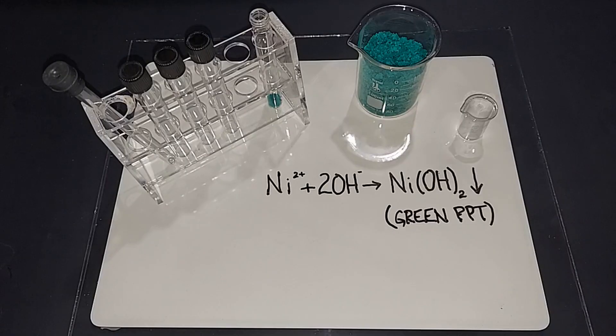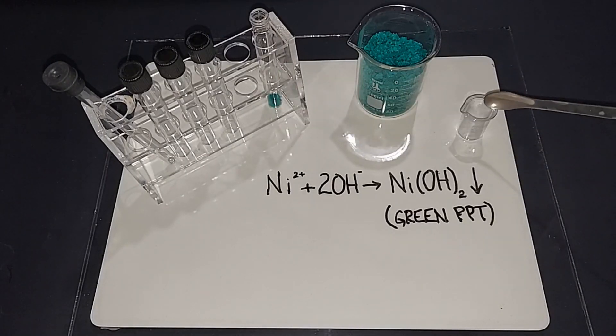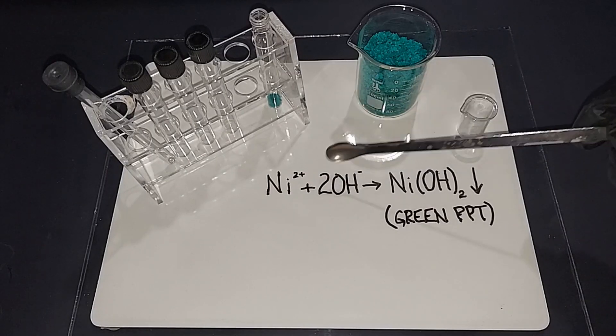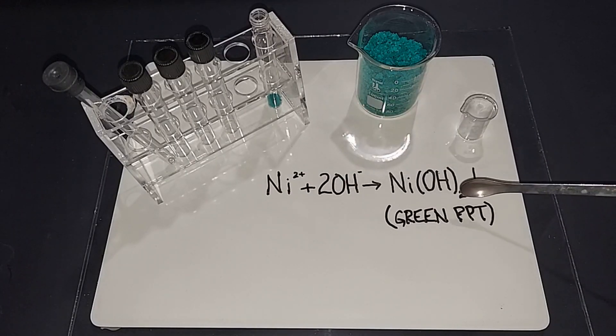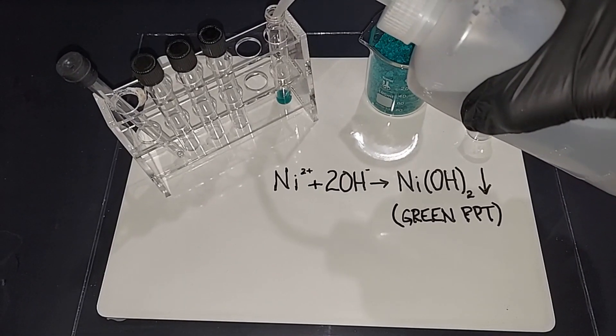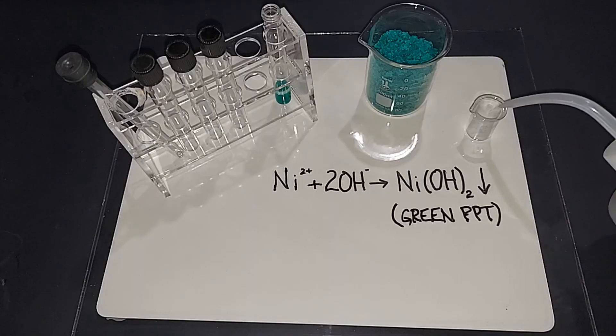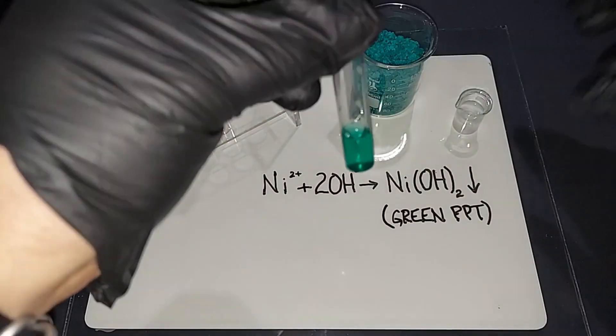Now on to some testing. You can see the equation right here. I'm going to dissolve this nickel nitrate, and this is also sodium hydroxide. You can see when the nickel ions and the hydroxide ions combine, you get nickel hydroxide, which is a green precipitate. Just adding a little water to both of them. Now that they're both dissolved, I'll show you the reaction here real quick. And there's your nickel hydroxide precipitate.